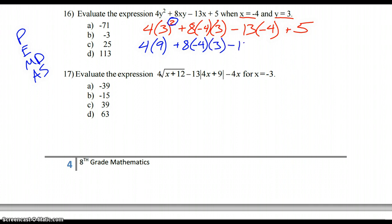So now we're ready to multiply from left to right. So 4 times 9, I get 36. And then here you can do a couple things. You've got a positive 8 times a negative 4 times a positive 3. So you could, if you wanted to, just go left to right.